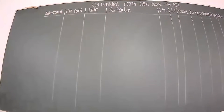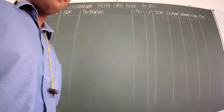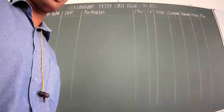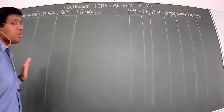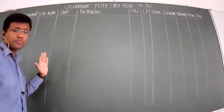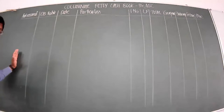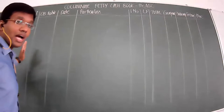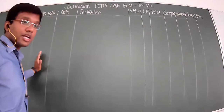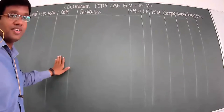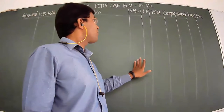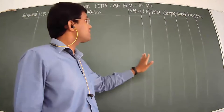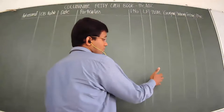In the columnar petty cash book, you have different columns for different petty transactions, unlike the simple petty cash book. I'll explain the format and then we can start solving the numerical. Here we have the 'amount received' column - whenever you receive any amount of money from the main cashier, it gets recorded here. Then you have date, particulars, and voucher number - whenever you carry out any transactions you use the voucher number to record the reference number. Then you have a ledger folio and total column.